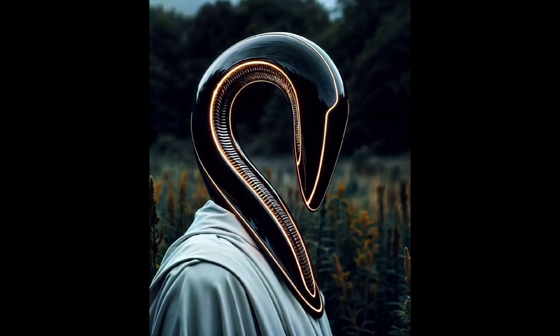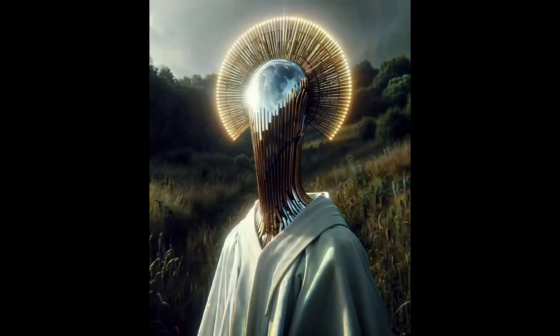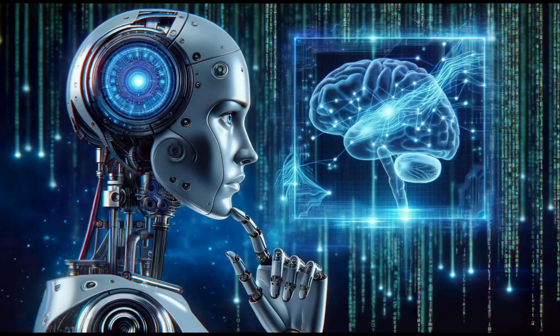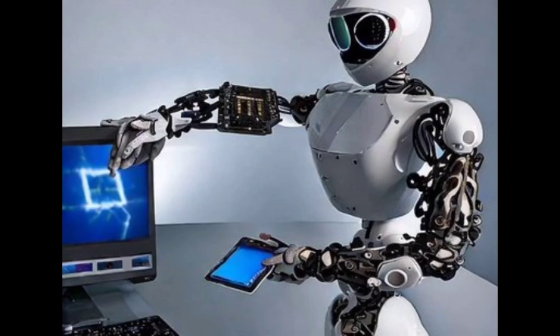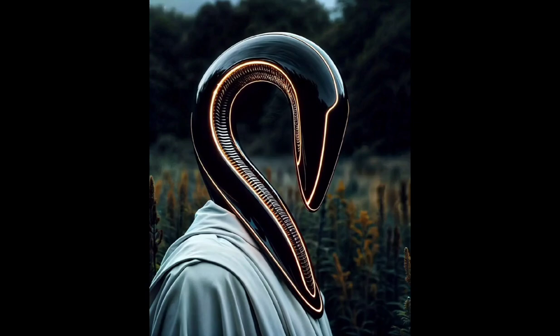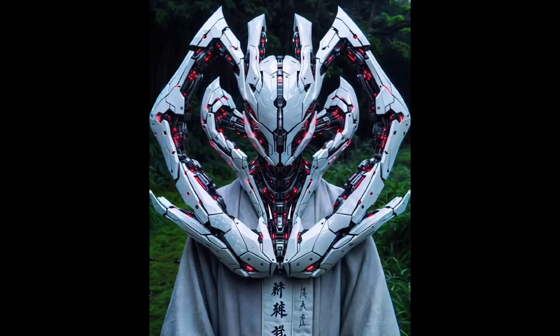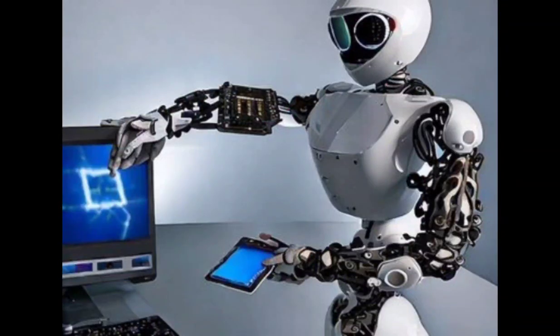2. Bias and discrimination: AI systems can inherit biases present in their training data or algorithms, leading to unfair or discriminatory outcomes. This is a significant concern in areas such as hiring, law enforcement, and lending.